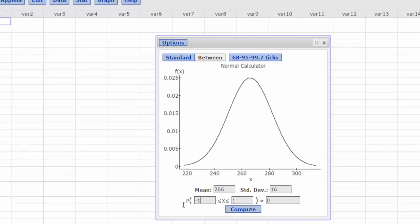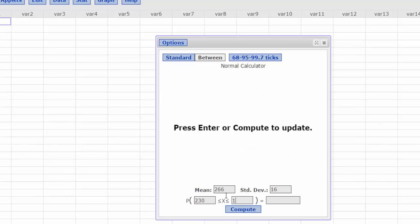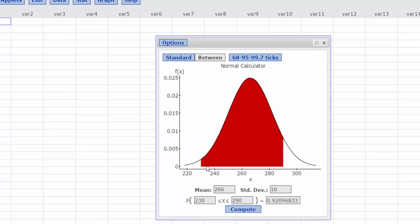So I enter 230 and 290, and I press Compute. And now this will give me the area under the curve between those two values. And here is my probability.